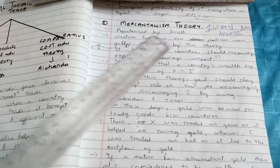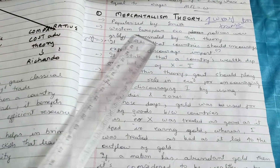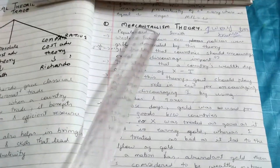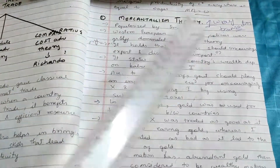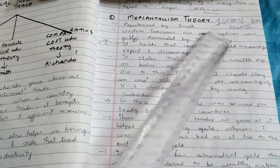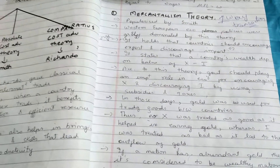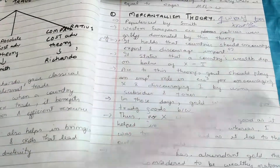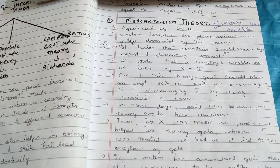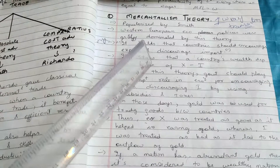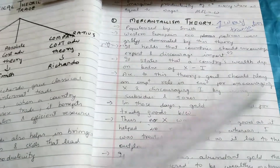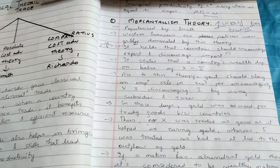The theory of mercantilism was popularized by Adam Smith, the father of economics. This theory describes one-way transactions — it is a selfish type of reality in foreign trade. The focus is on exporting to sell, not on importing. Our goods will return in the form of money.